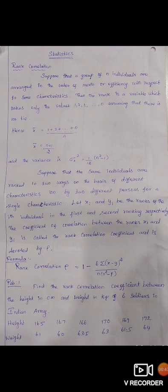Let xᵢ and yᵢ be the ranks of the i-th individual in the first and second ranking respectively. The coefficient of correlation between the ranks xᵢ and yᵢ is called the rank correlation coefficient and is denoted by ρ.